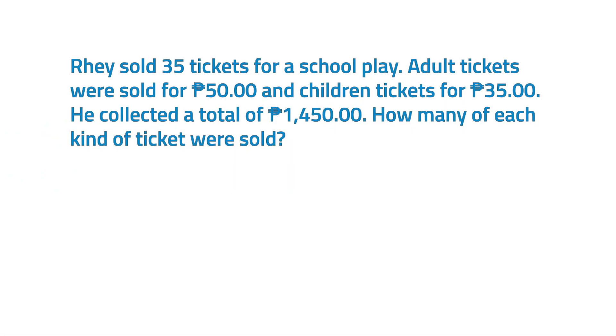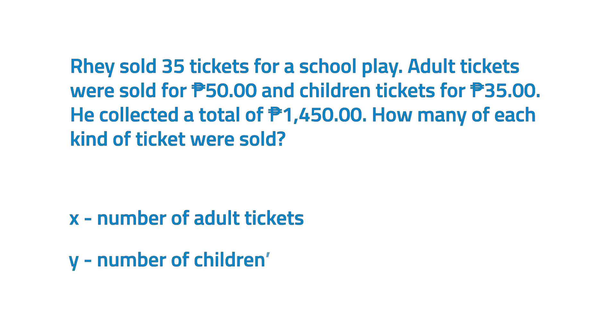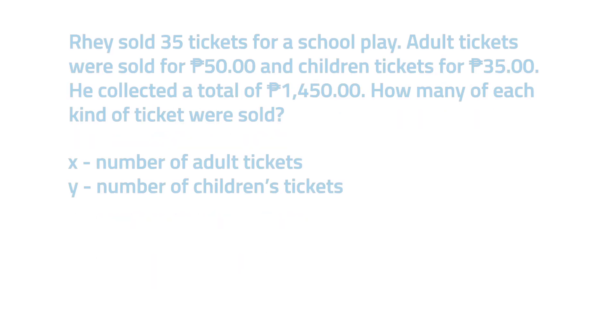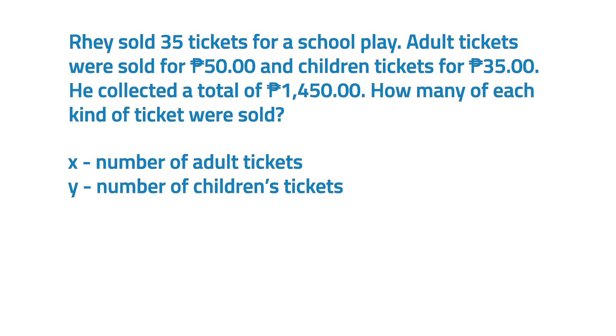In order to find out how many of each kind of ticket were sold, we need to recognize that we are dealing with more than one variable and likely more than one equation. There are two quantities suggested in the problem. One is the number of adult tickets, which you may represent by x. The other is the number of children's tickets, which you may represent by y. The total number of tickets sold can be represented by the equation x plus y is equal to 35.